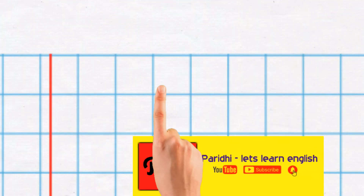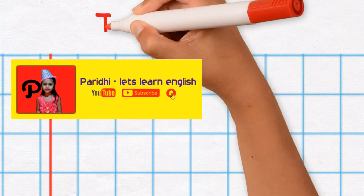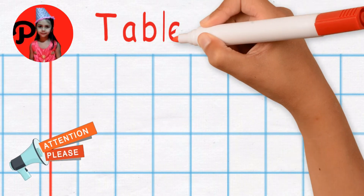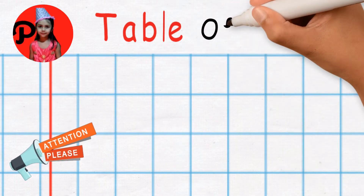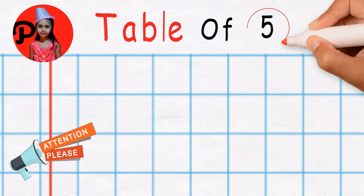Hello kids, welcome to Paridi. Let's learn English. Today we will read and write the table of five. So let's start.